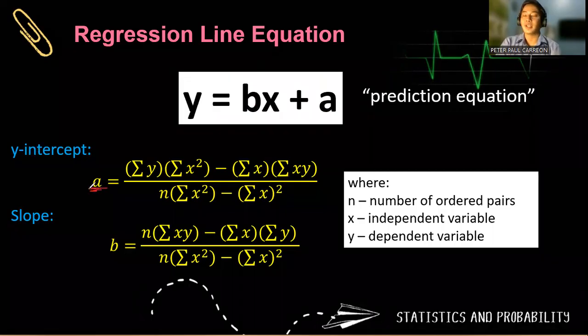So to get the y-intercept a, that is the summation of y times the summation of x squared, minus the summation of x times the summation of xy, all over n times the summation of x squared minus the square of the summation of x.